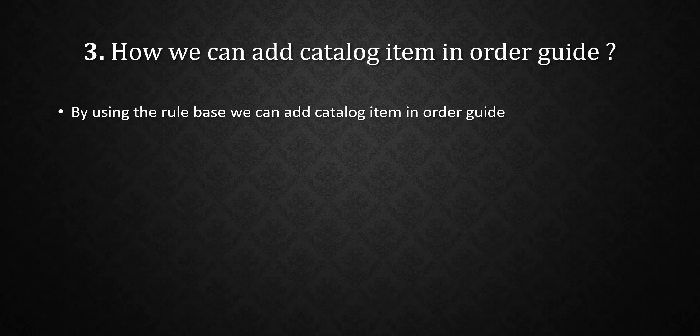The next question is: how can we add a catalog item in an order guide? This is a very general question that interviewers ask — how you can add any item, or add conditions like 'this item will show if the user has this role.' You can say: by using rule-based conditions we can add a catalog item in an order guide.